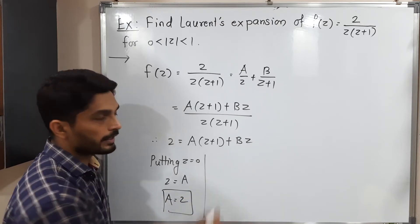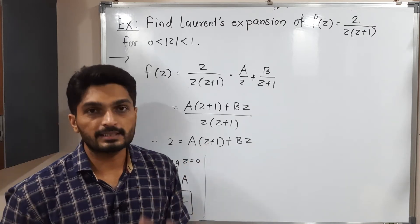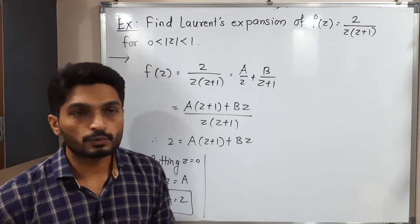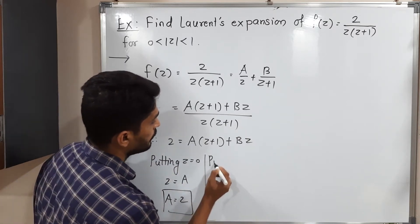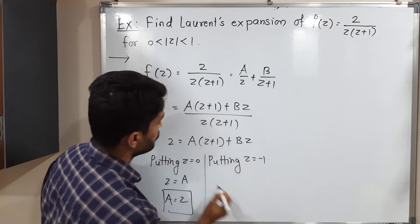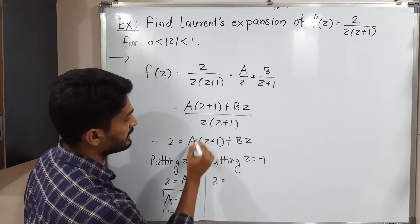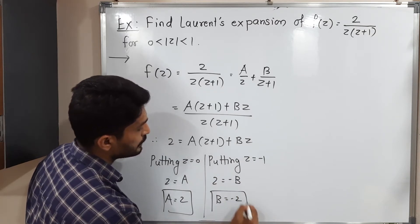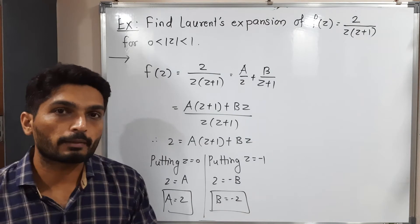Let us try to find the value of B. That means we have to make this bracket zero. If I put z equals minus 1, plus 1 minus 1 will be zero. Putting z equals minus 1, 2 equals minus B. That means the value of B is minus 2. So in this way, we found the values of A and B.